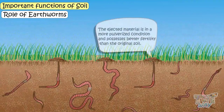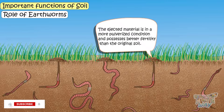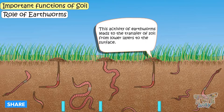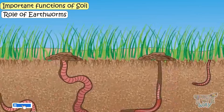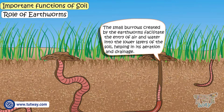The soil ejected by earthworms possesses better fertility than the original soil. This activity of earthworms leads to the transfer of soil from the lower layers to the surface. The small burrows created by earthworms provide the facility of aeration and drainage in the soil.